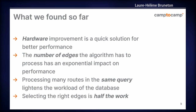What we found so far: we have a goal to be below one second, so we are ready to use any possible way to achieve it. A simple truth is the fastest way to reduce time is to improve hardware. The number one truth about routing is that if you lower the number of edges the algorithm has to process, it has an exponential impact on computation time. We also found that processing many routes in the same query really helps — we discovered this with the many-to-one overload. Selecting the right edges is half the work, and the other half is the algorithm processing those edges.